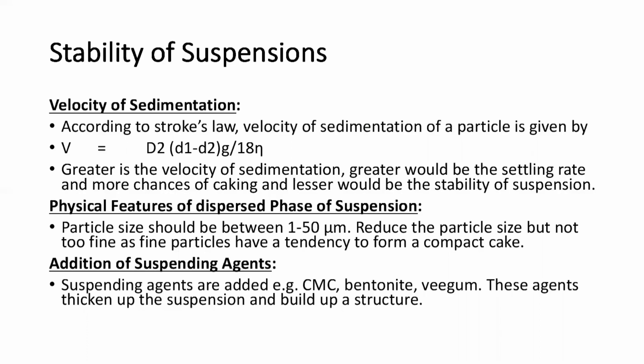Physical features of the dispersed phase of a suspension: particle size should be between 1 to 50 micrometers. Reduce the particle size but not too fine, as fine particles have a tendency to form a compact cake. Addition of suspending agents like carboxymethylcellulose, bentonite, and veegum thicken up the suspension and build a structure.